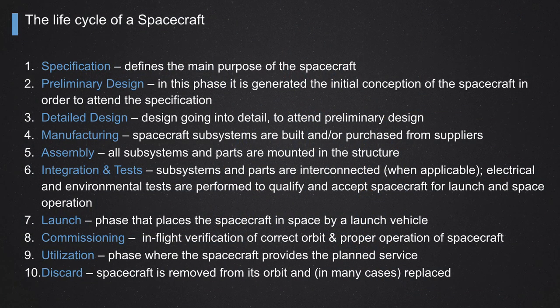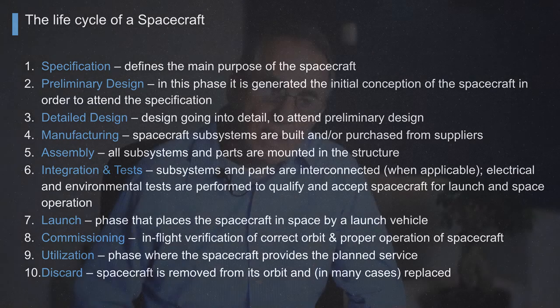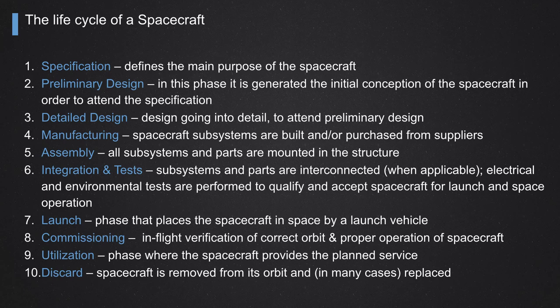After finishing the preliminary design phase, we go to the detailed design of the spacecraft. Here every group goes to their respective areas to do the detailed design of each section. The structural team works on the structural model, the thermal team designs the thermal control parts, and the propulsion team works to make sure propulsion will meet the specification and preliminary design. All the detailed design of the spacecraft is completed in this phase.